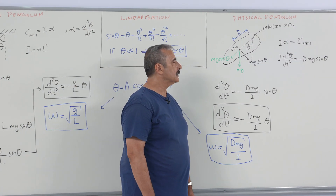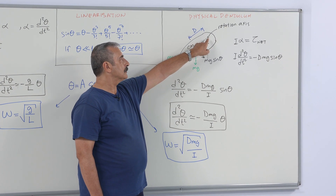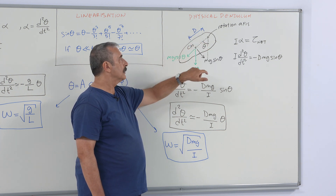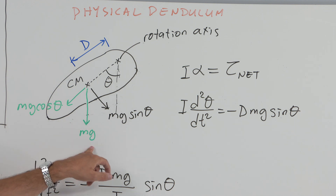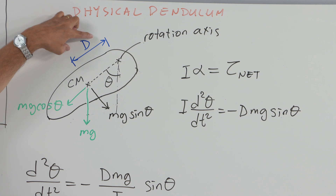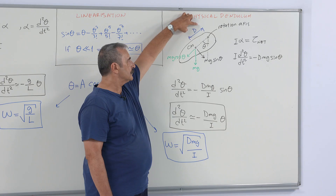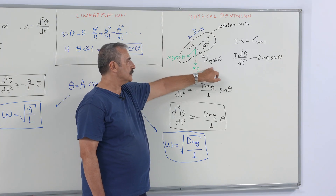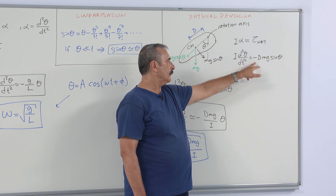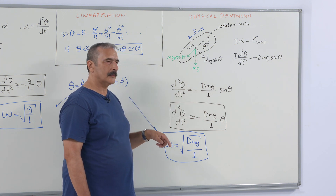A physical pendulum is any rigid object that is free to rotate about some rotation axis away from its center of mass, moving under the effect of gravity. Gravity again acts as a restoring torque as it is deflected by angle theta from its equilibrium position. The restoring torque is d times mg sine theta. Constructing the torque equation, we again have a nonlinear equation in the same form as the simple pendulum.